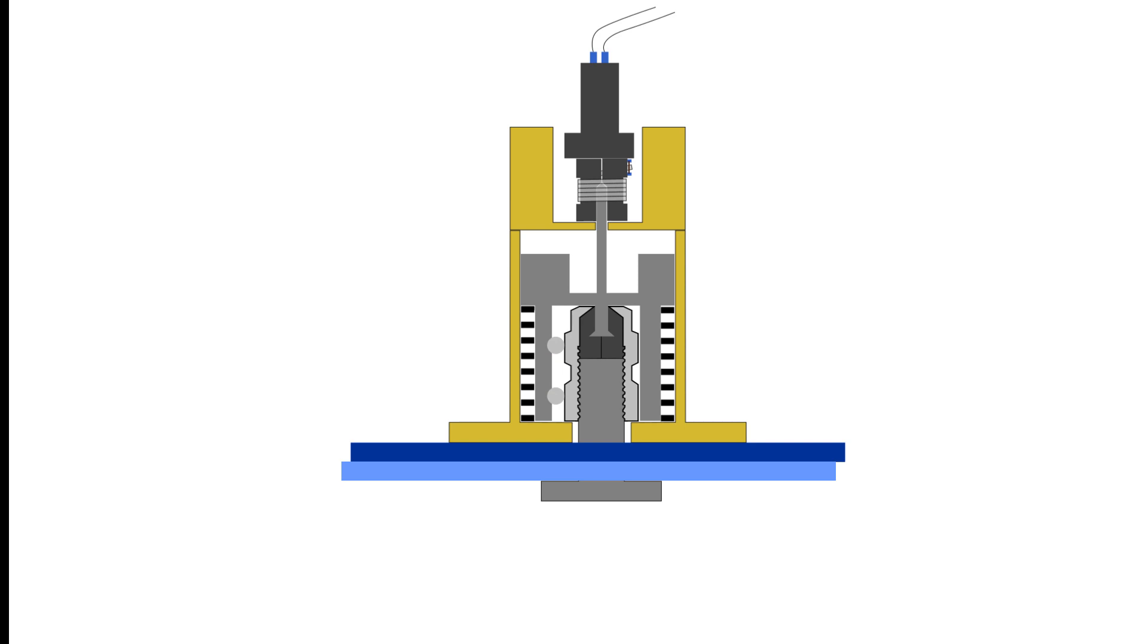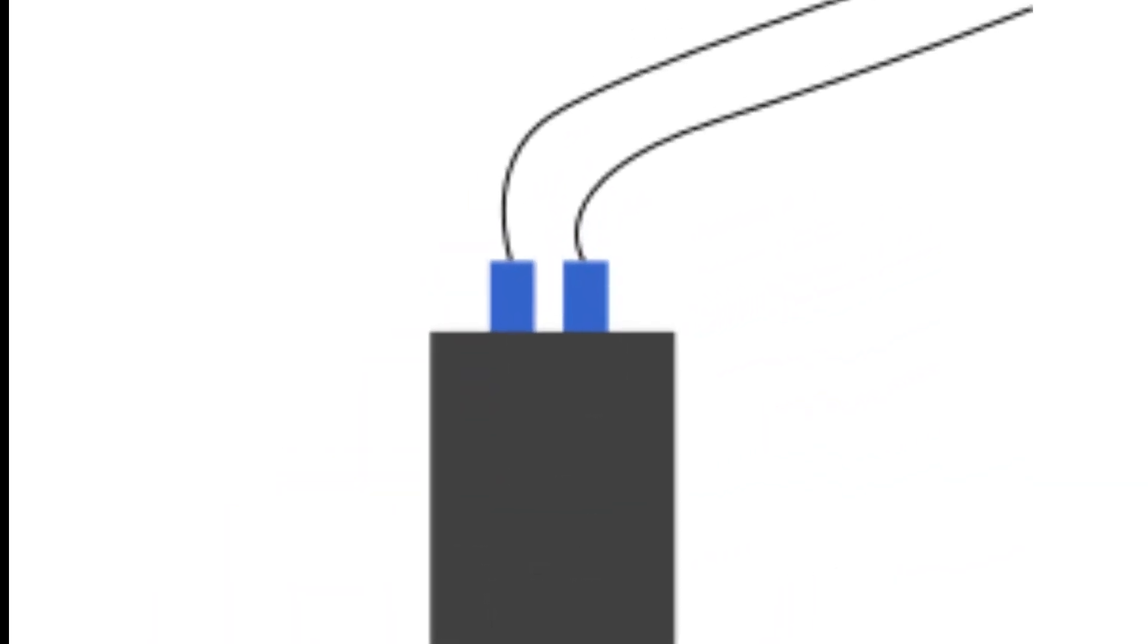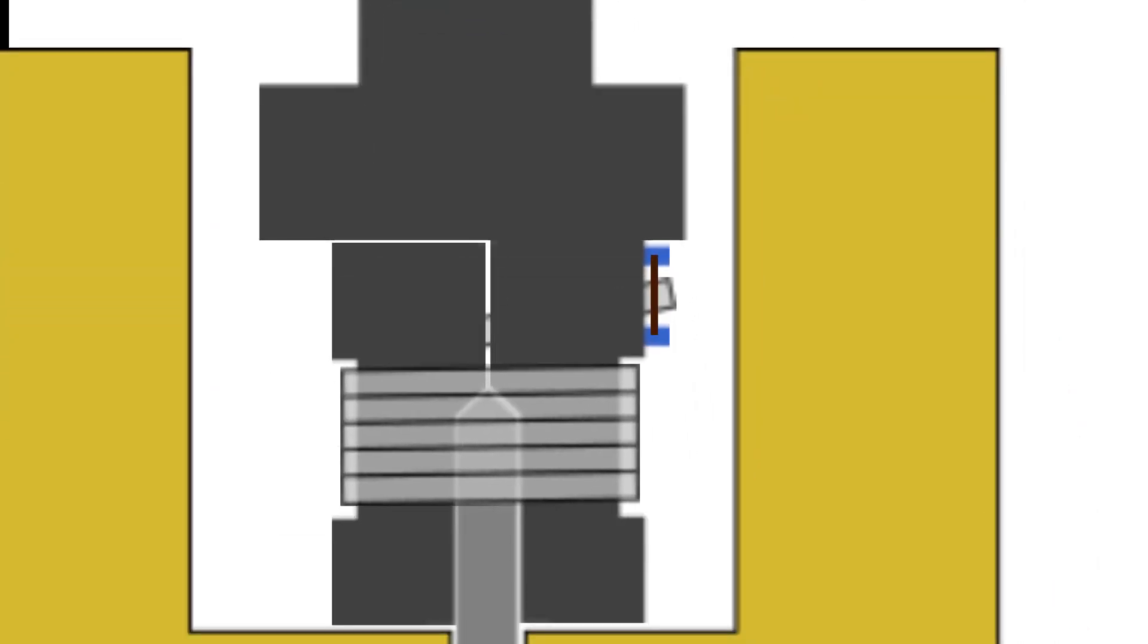To trigger this HDRM and release the bolt, a high current is passed through the link wire. This causes it to vaporize and release one end of the tensile wire. Now with only one side held down, the tensile wire unwinds and is unable to hold the two hemispheres of the cylinder together.